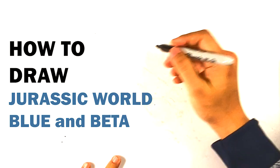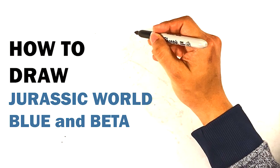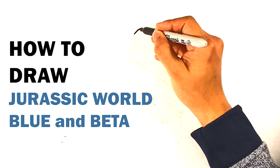All right, let's go over how to draw Blue and Beta from Jurassic World Dominion. I'm going to start with Blue because Blue is a lot bigger and closer to the camera here.